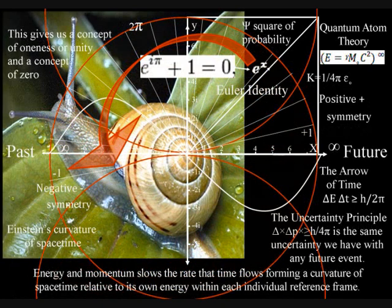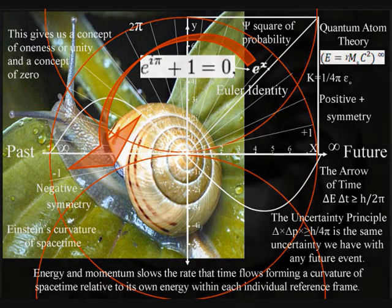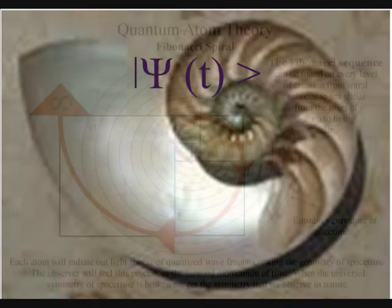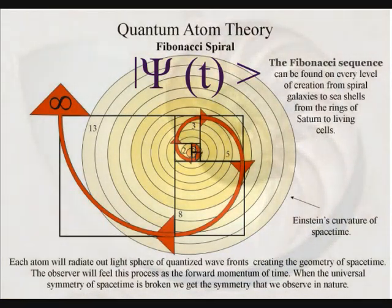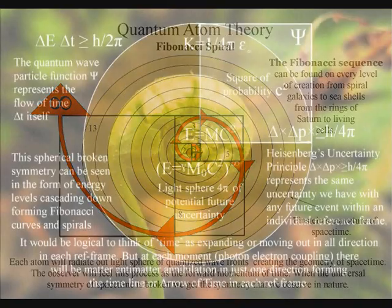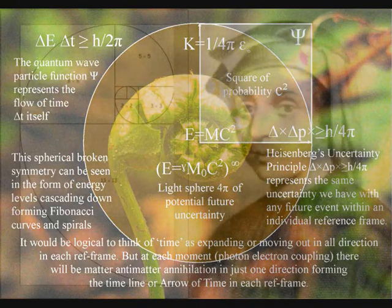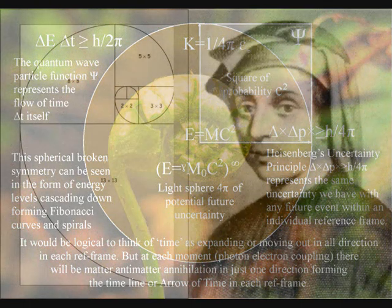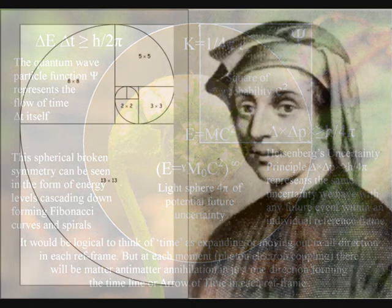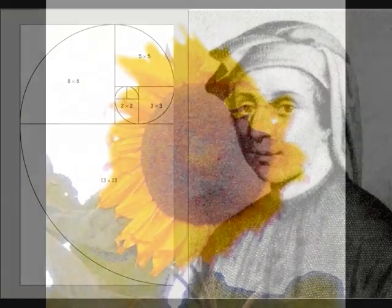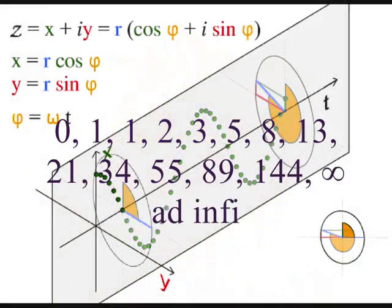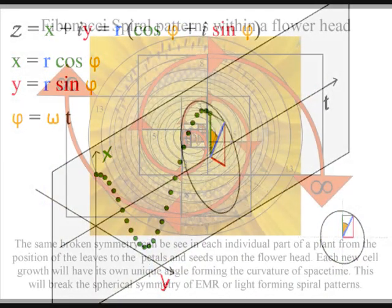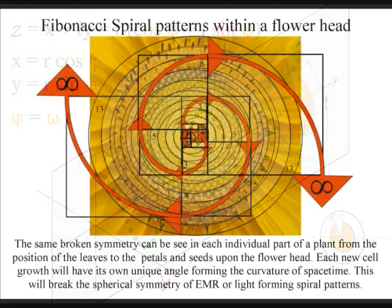This is because, if the quantum wave particle function, or probability function, is reformulated as a linear vector, then all the information I can find says that each new vector is formed by adding the two previous vectors together. This forms the Fibonacci sequence. In this theory, we have the Fibonacci numbers in nature, not because of economy of growth, or space, but because time and space is being formed by the geometry, and therefore the mathematics, of this dynamic process.